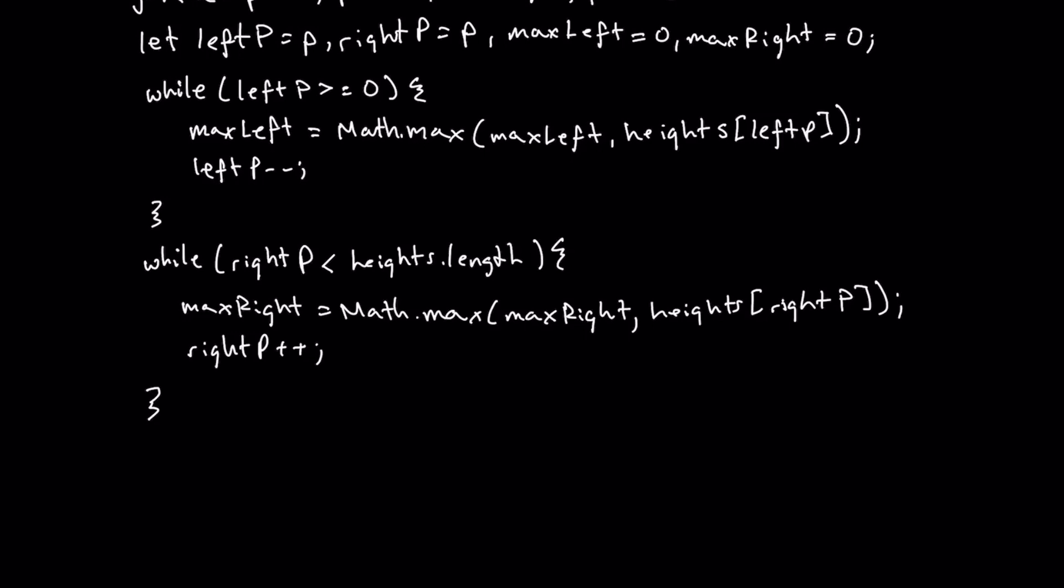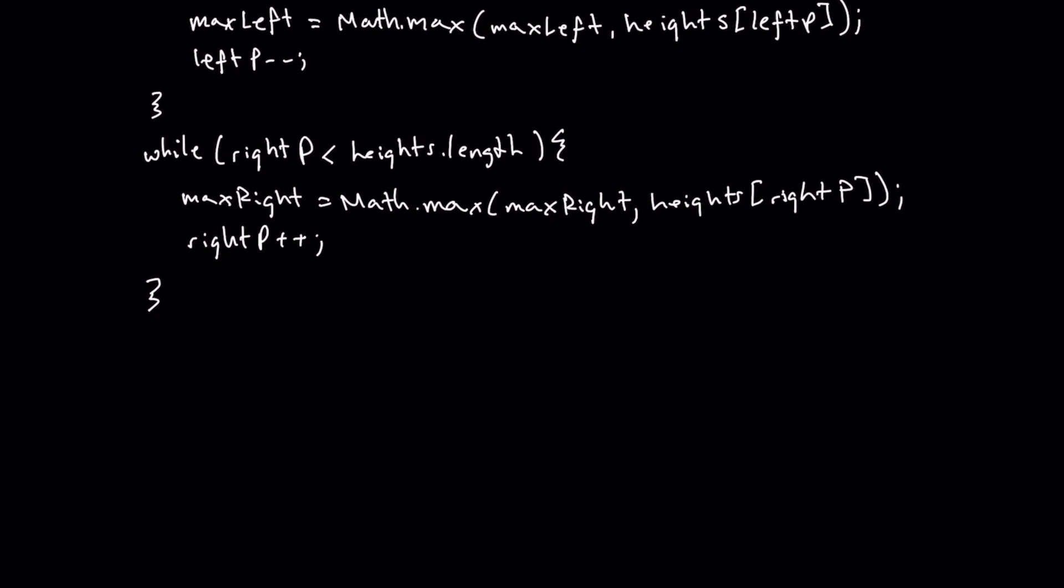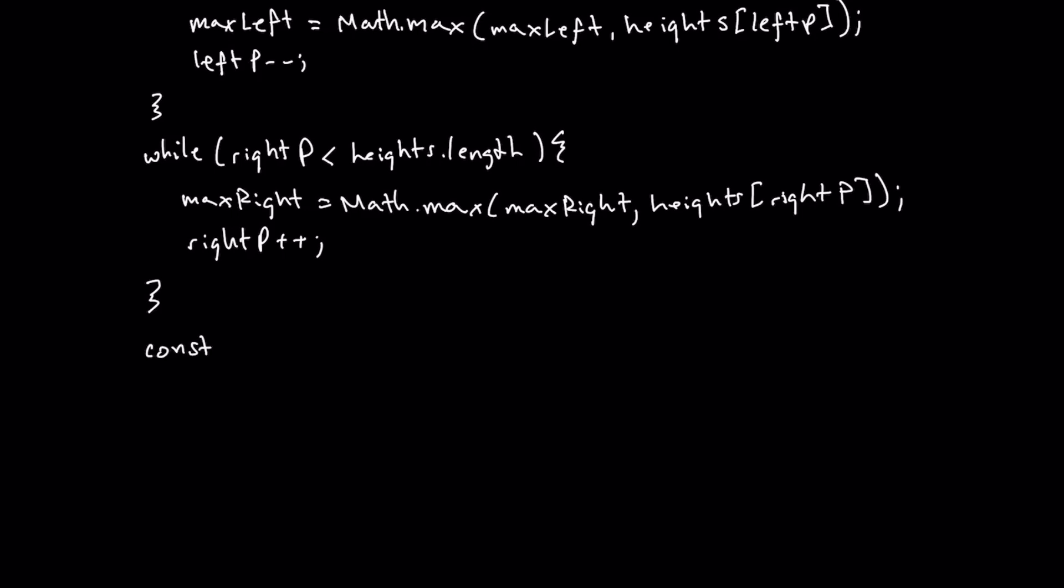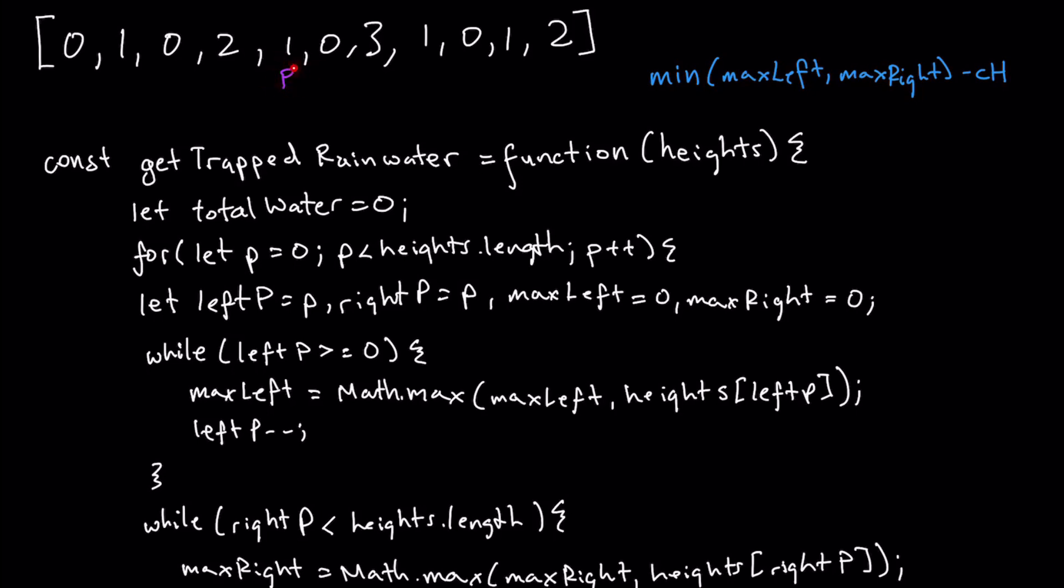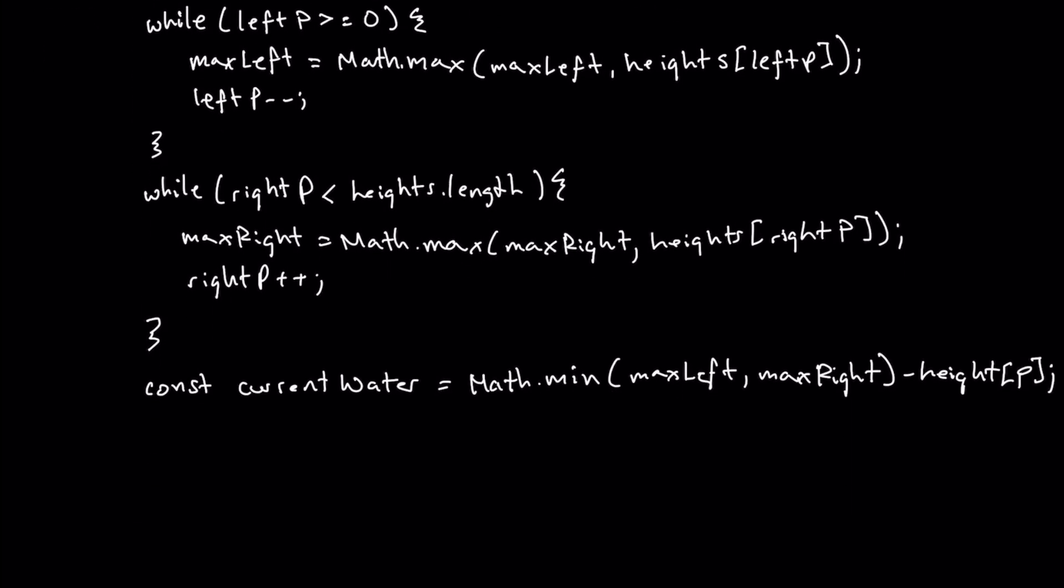So now that we have our max left and max right we need to calculate and store the current water that we have so far. I'm going to say const current water is equal to our calculation. So we need the minimum value between the two maxes that we have. So let's say we need the max left and the max right and then we're going to subtract our current heights at our current P value. So here what we're doing is we are just subtracting it from where this P currently is. And what we're also doing is we're now just using this function. That's all that code is doing. That's the current water calculation that we have right here.